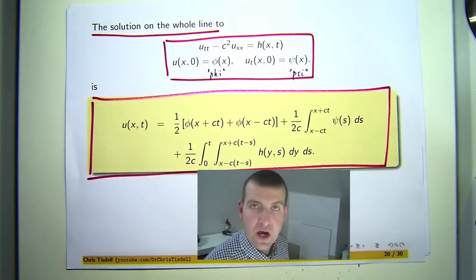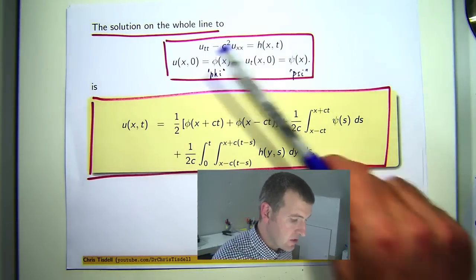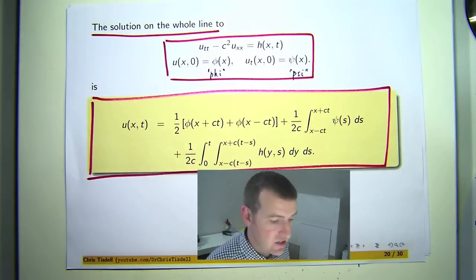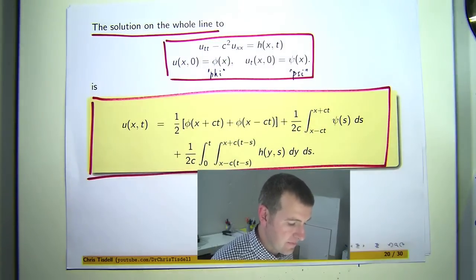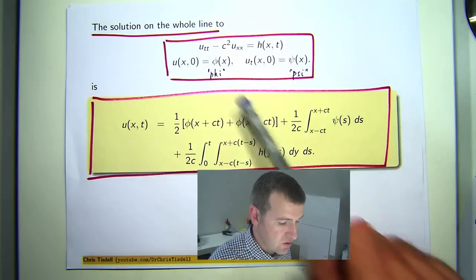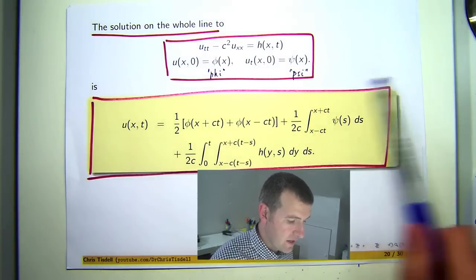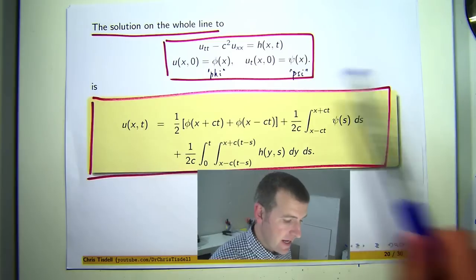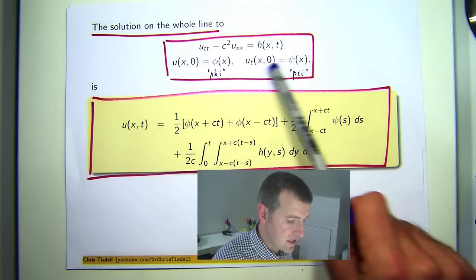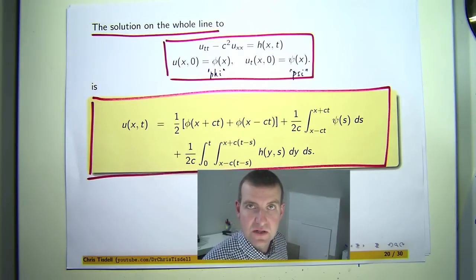h is the non-homogeneous term, a function of position x and time t. You have the initial displacement or initial position of say a string at time t equals 0 given by this function phi. And you have the initial velocity given by this function psi at t equals 0.